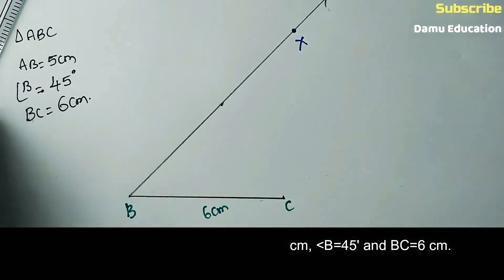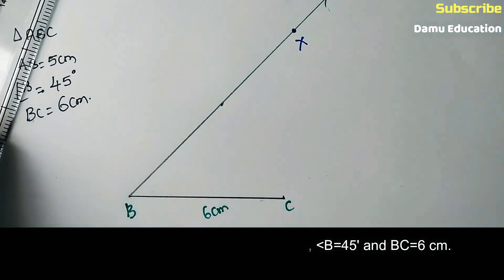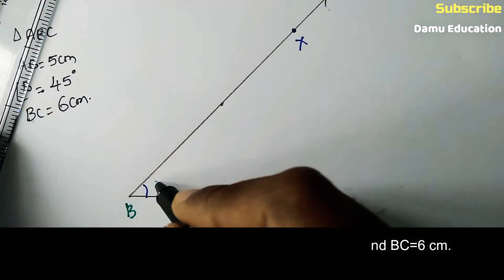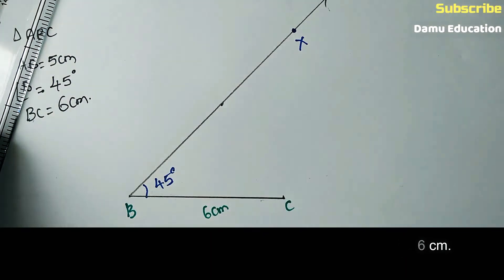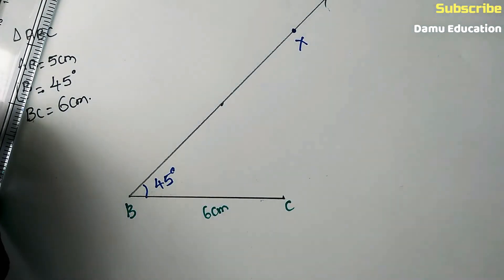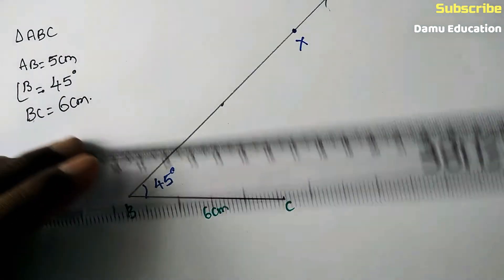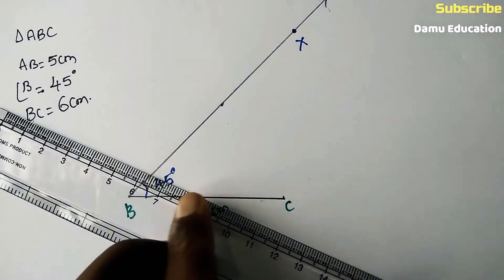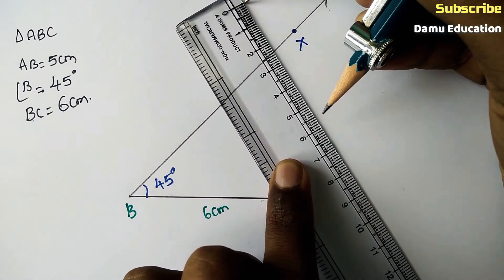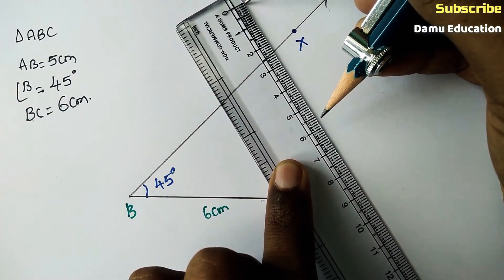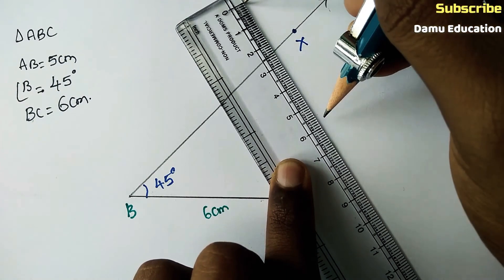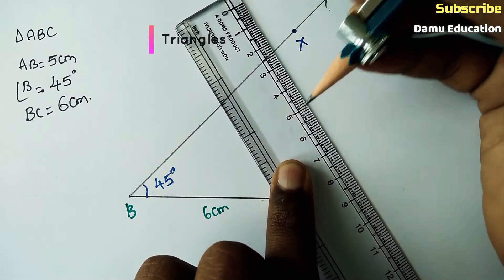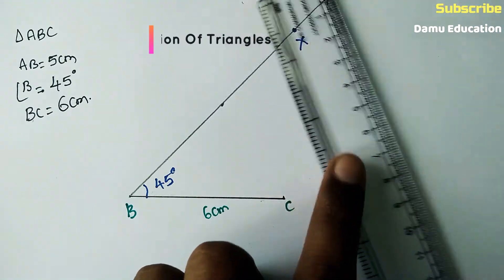The ray BX makes an angle of 45 degrees. AB needs to be drawn on this ray. Set the scale to 0 and measure 5 centimeters — that is the length of AB, which is 5 centimeters.